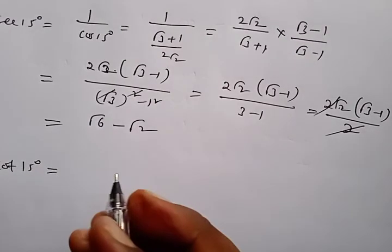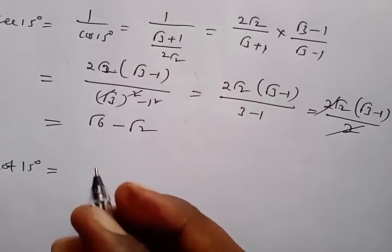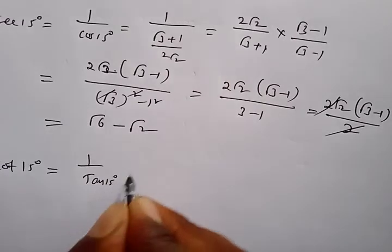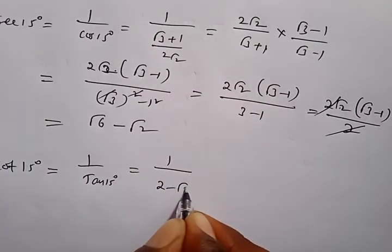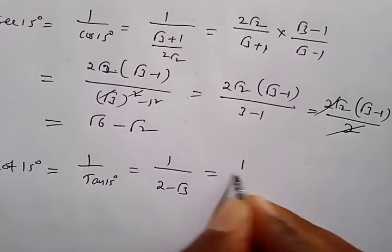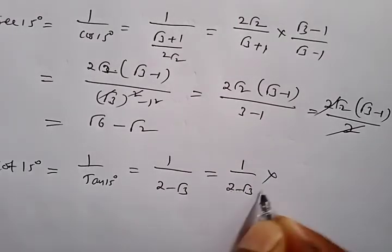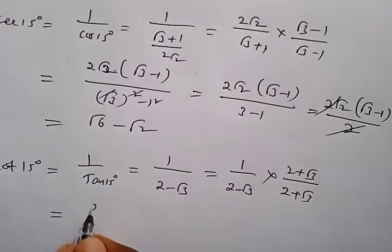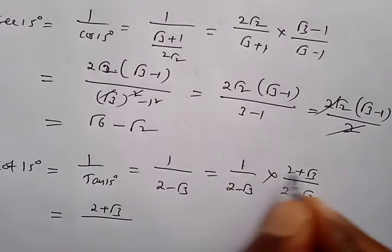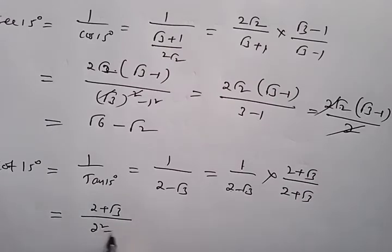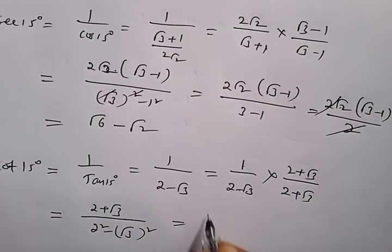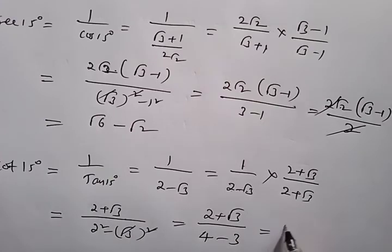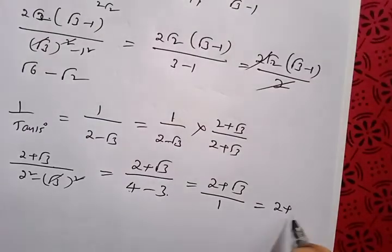For cot 15° = 1/tan15° = 1/(2-√3). Rationalizing by multiplying by (2+√3)/(2+√3): numerator = 2+√3; denominator = 4-3 = 1. So cot 15° = 2 + √3.